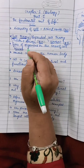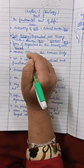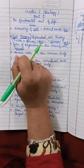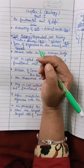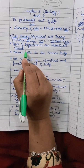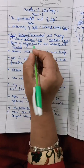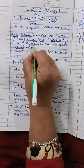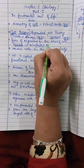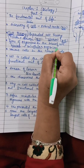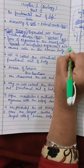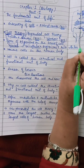From earlier classes, you have been learning about single-celled and multicellular organisms. We can divide organisms on the basis of their cell number, and there are two types: unicellular organisms and multicellular organisms.